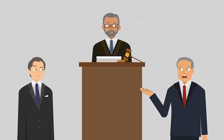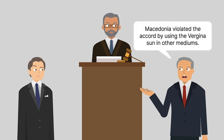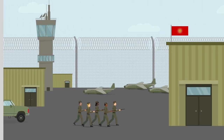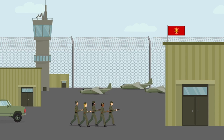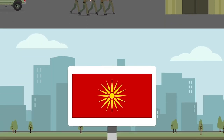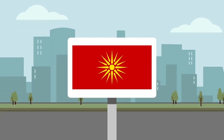Greece also argued that Macedonia violated the accord because Macedonia continued using the Vergina Sun symbol in other mediums. For example, a Macedonian army regiment used the symbol until 2004. Private citizens also used the symbol on billboards and other public displays.